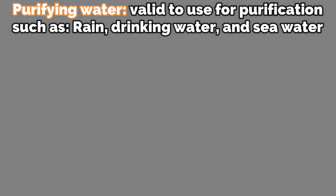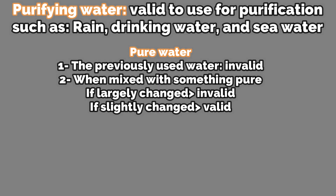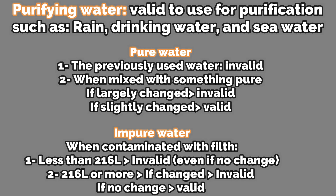If the pure substance only slightly changed the water, or didn't change it at all, you can use it to make wudu, just like purifying water. For example, if tree leaves fell into the water and you removed them with no change to the water, you can still use it. If some flies fell into the water, just take them out and you can use the water. The third type is impure water: if it's less than 216 liters and there is filth in it, it is najis and you cannot use it to make wudu, whether something has changed or not. If it's 216 liters or more, check: if color, taste, or smell changed, it's invalid and najis; if nothing changed, it's still purifying.